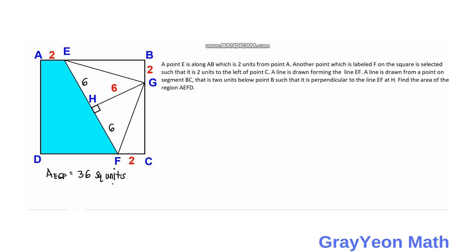Next, we find the area of the two triangles EBG and GCF. These two triangles are right triangles and are congruent because their sides are S minus 2 and 2 for the shorter legs. Triangle EBG has legs EB equals S minus 2 and BG equals 2, and triangle GCF is similarly congruent. So we just find the area of triangle EBG and multiply by 2.